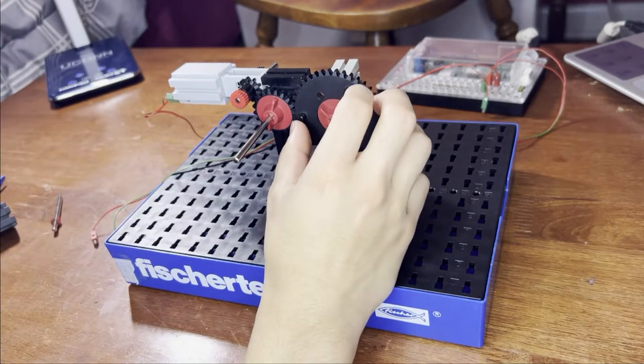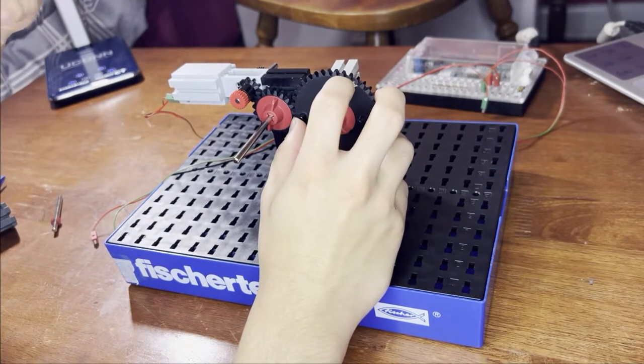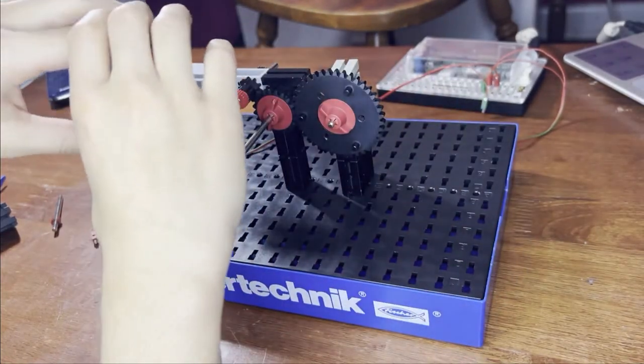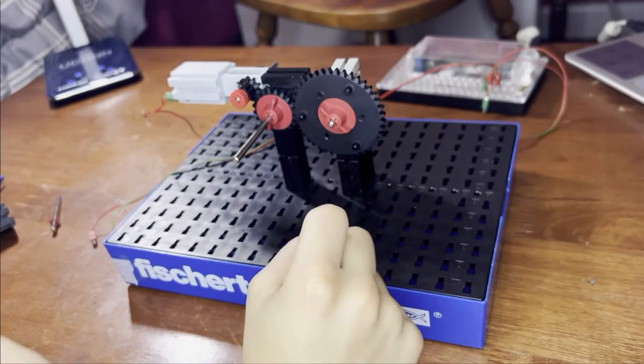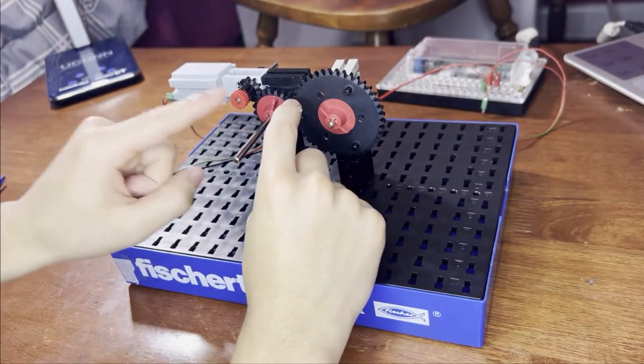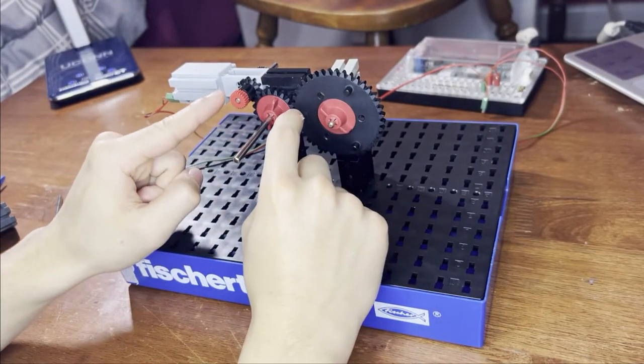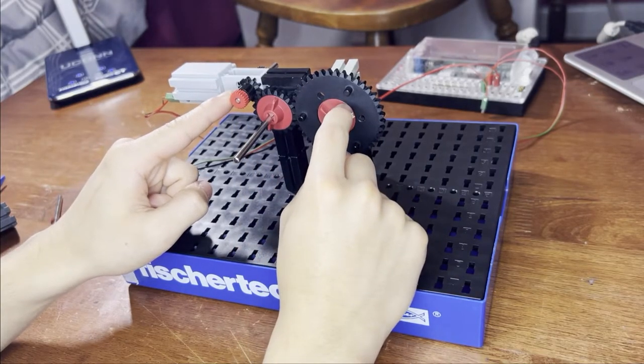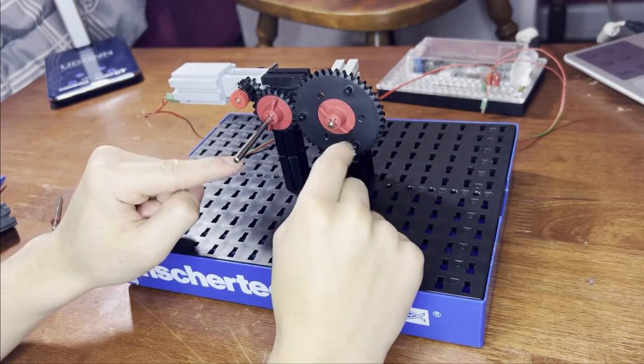And so the function of an idler gear can be two functions. It's either to carry the rotational movement across a longer distance, or because when gears mesh they rotate in opposite directions, it can be made so that the driver gear and the driven gear rotate in the same direction.